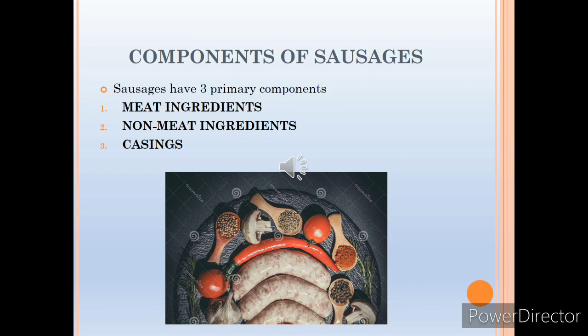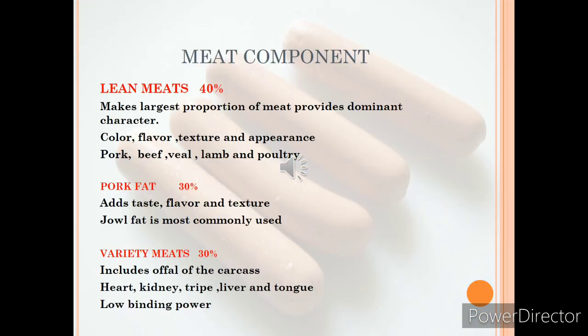A sausage has three primary components: the meat ingredient, the non-meat ingredient, and both these items are stuffed inside the casing. Different types of meat can be used for making sausages. Traditionally the meat component has four parts: the meat as the primary ingredient, then binding agent, seasoning, flavoring and garnish, and finally additives. The meat component comprises lean meat at 40%, pork fat at 30%, and variety meats which include offals — heart, kidney, tripe, liver and tongue — contributing the remaining 30%.